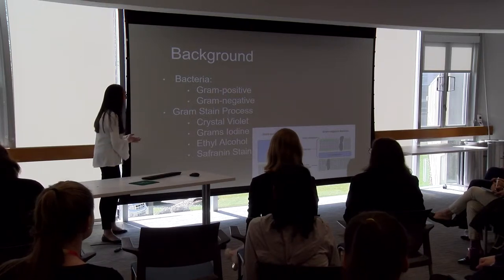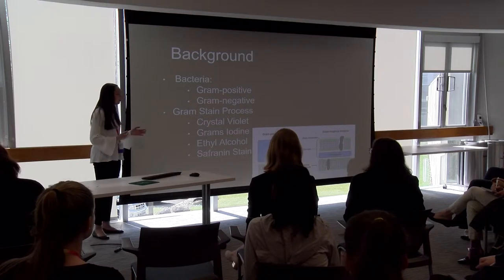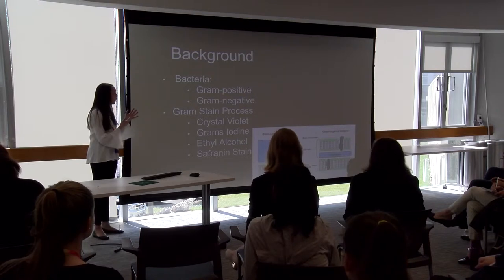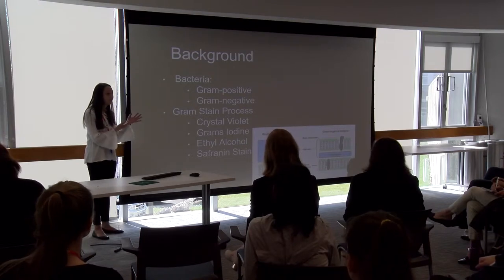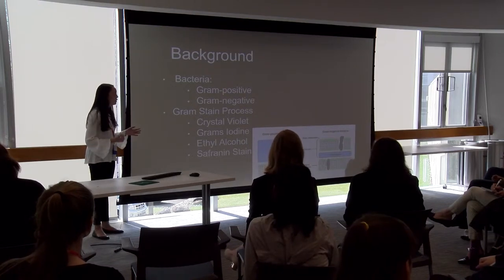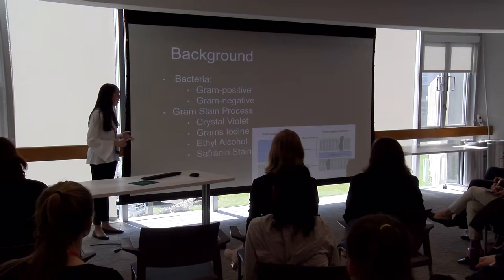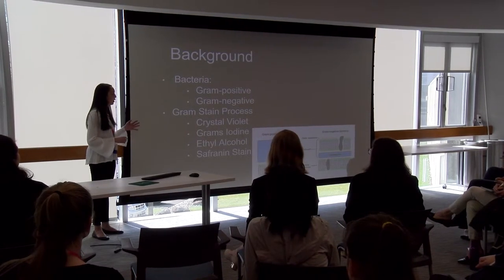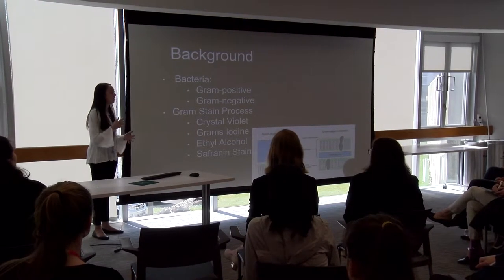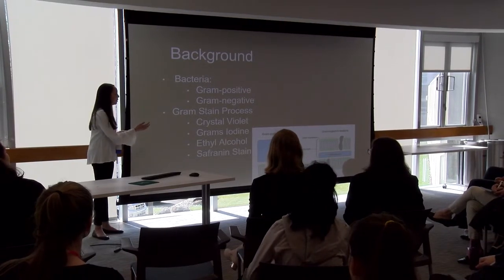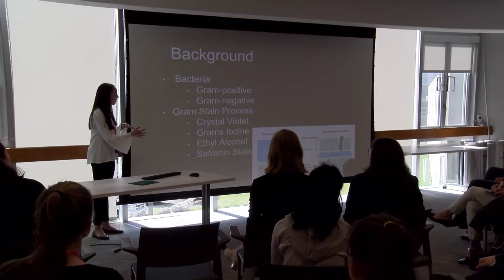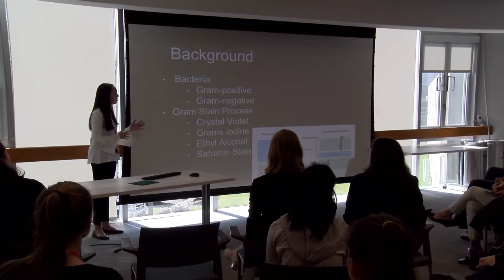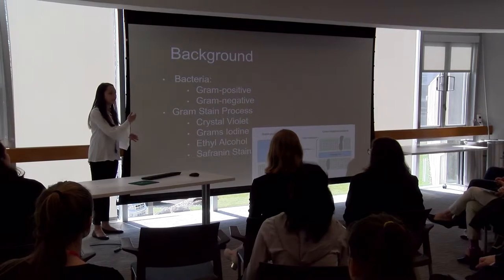The gram stain process is what I used to figure out the gram classifications of the two bacteria. This involves using the chemicals crystal violet, Gram's iodine, ethyl alcohol, and safranin, staining in 60-second intervals to see which ones would be attached to the substances found in the cell walls.